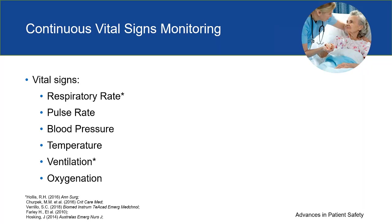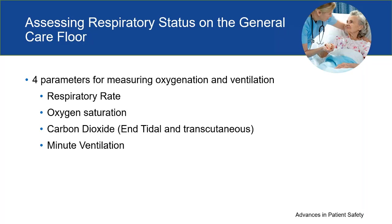I want to go into the definition of ventilation and how we can measure it compared to oxygenation. To adequately assess for those three patterns of rapidly evolving clinical cascades, you will assess ventilation as opposed to oxygenation. The three main ways of measuring ventilation are: a combination of respiratory rate with oxygen saturation, carbon dioxide — which has two types, end-tidal and transcutaneous — and minute ventilation. There are devices that have been validated and are clinically useful.